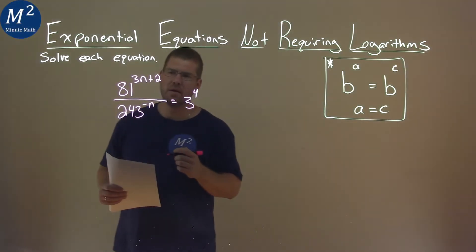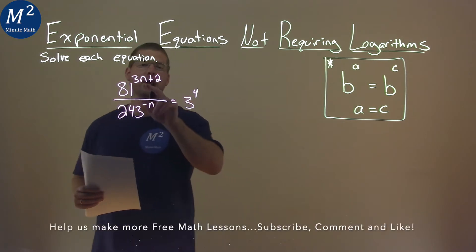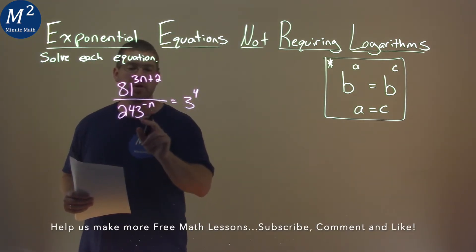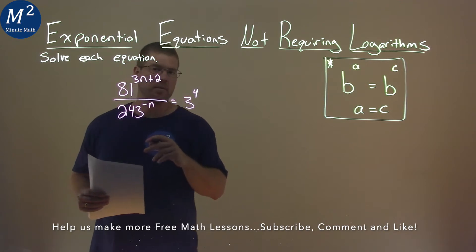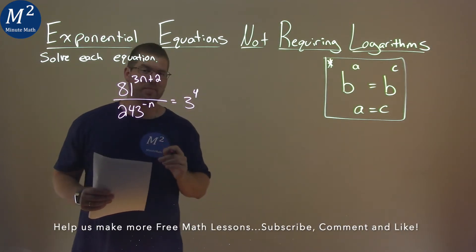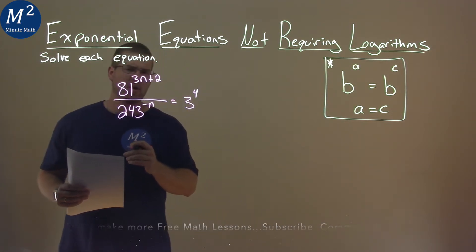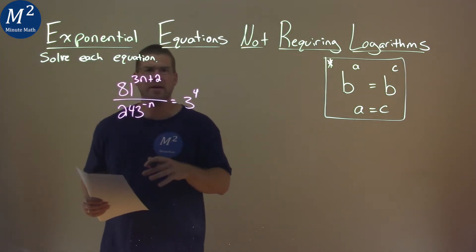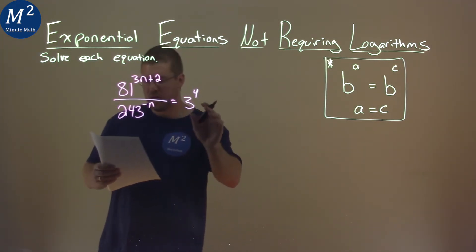We're given this problem right here: 81 to the 3n minus 2 power over 243 to the negative n power, that's equal to 3 to the 4th power, and we've got to solve this. Well, 81 and 243, I can write in some form of 3.